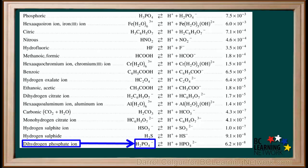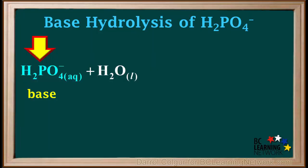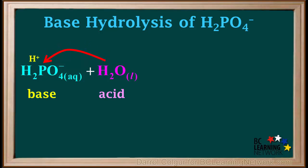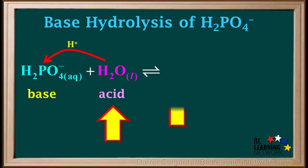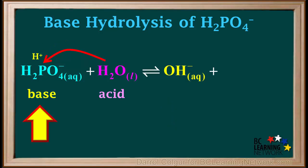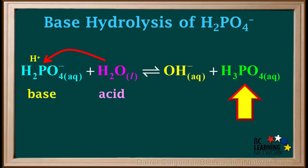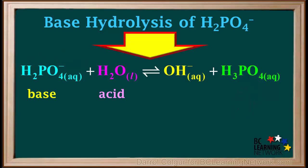Looking on the acid table, we see that H2PO4- is also on the right side, which means it can also undergo base hydrolysis. When H2PO4- undergoes base hydrolysis, it plays the role of a base and water plays the role of an acid. A proton is transferred from a water molecule to the H2PO4- ion. When a water molecule loses a proton, it forms its conjugate base, a hydroxide ion, OH-. And when H2PO4- gains a proton, it forms its conjugate acid, H3PO4, phosphoric acid. So this is the equation for the base hydrolysis of H2PO4-.